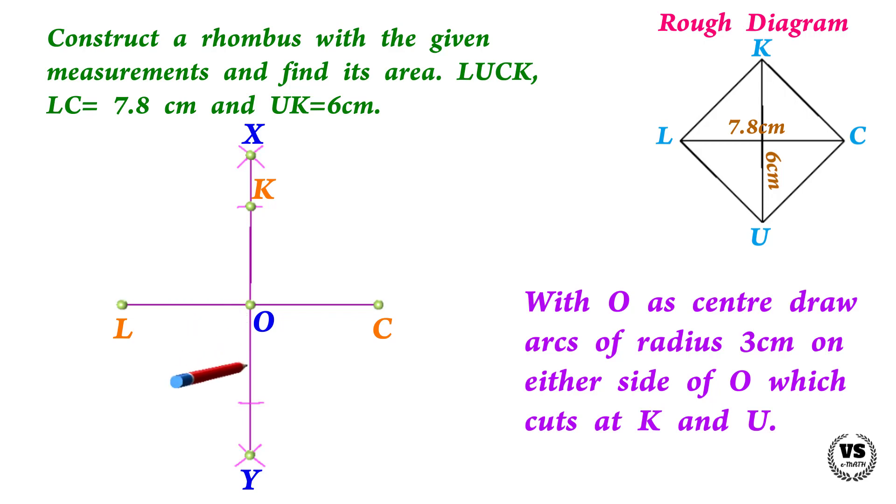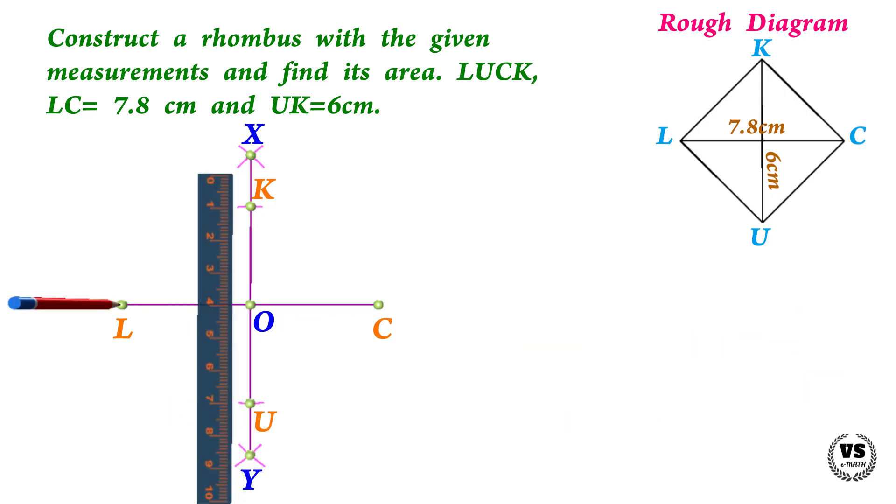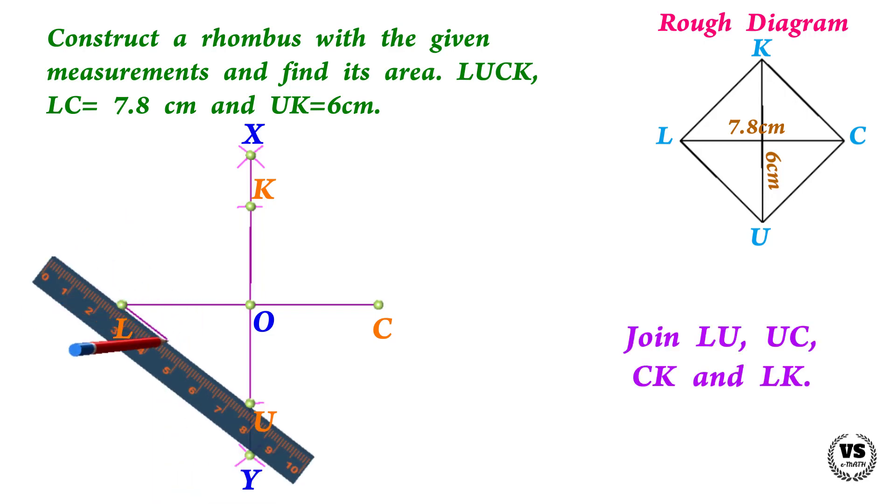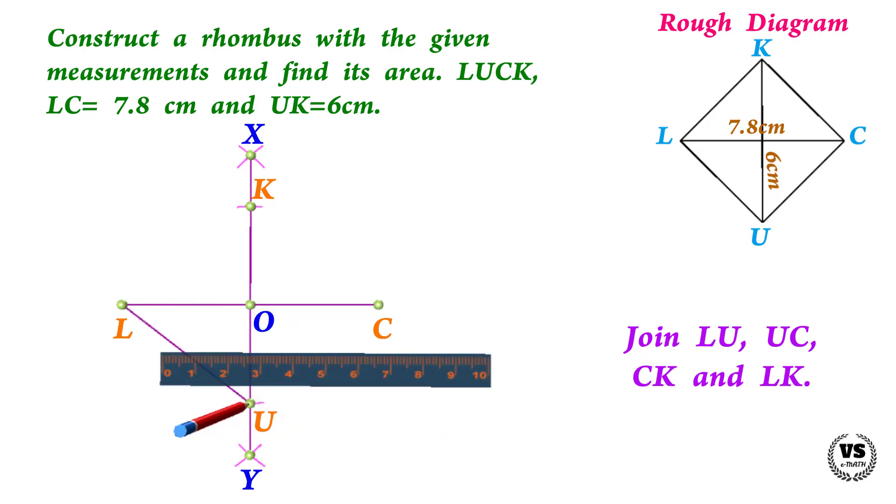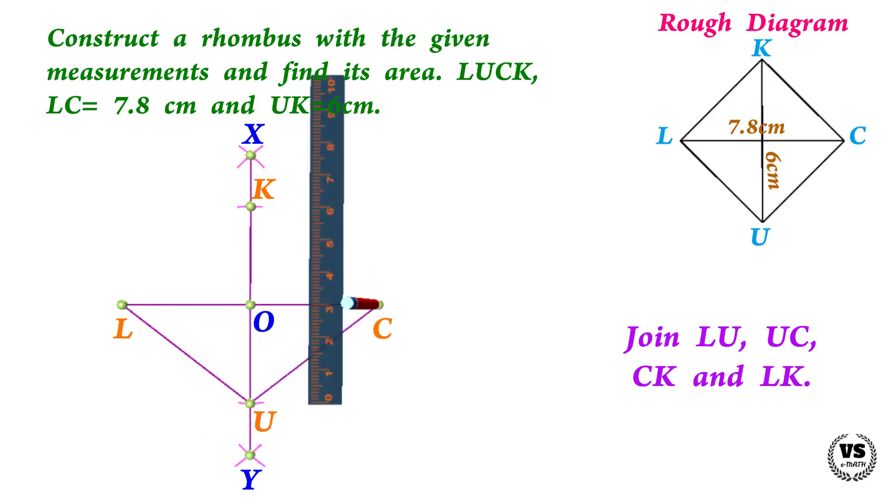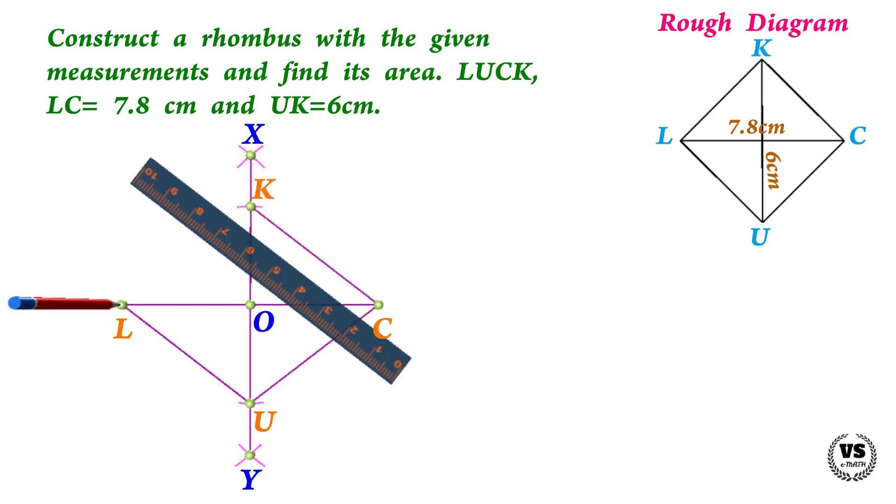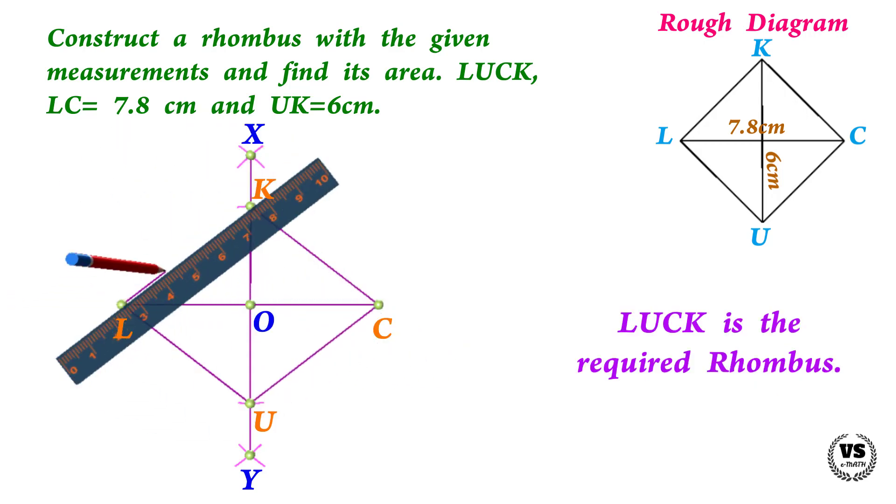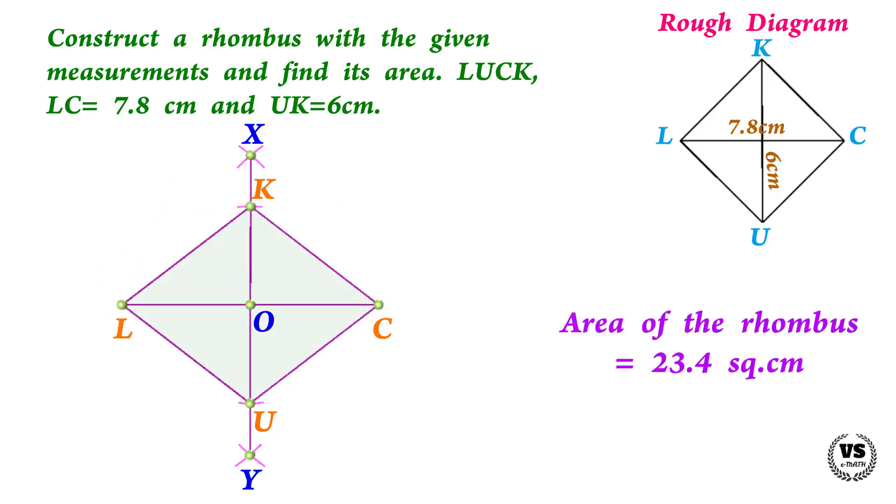Mark the points where it cuts at U and K. Join LU, UC, CK, and KL. LUCK is the required rhombus. Catch you in another video, thank you children.